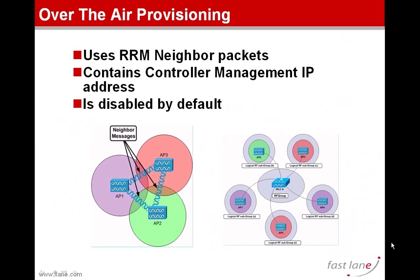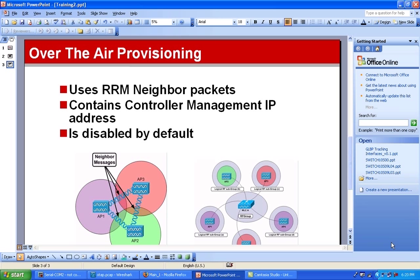So as you can see, the RRM aim is mainly to create groups of access points sharing the same wireless space, and then manage this group by determining power and channels. So if you add the OTAP feature, you add the controller information to these RRMNeighborPackets. Access points booting up will be able to hear these messages and use the OTAP information within them to find the controller.